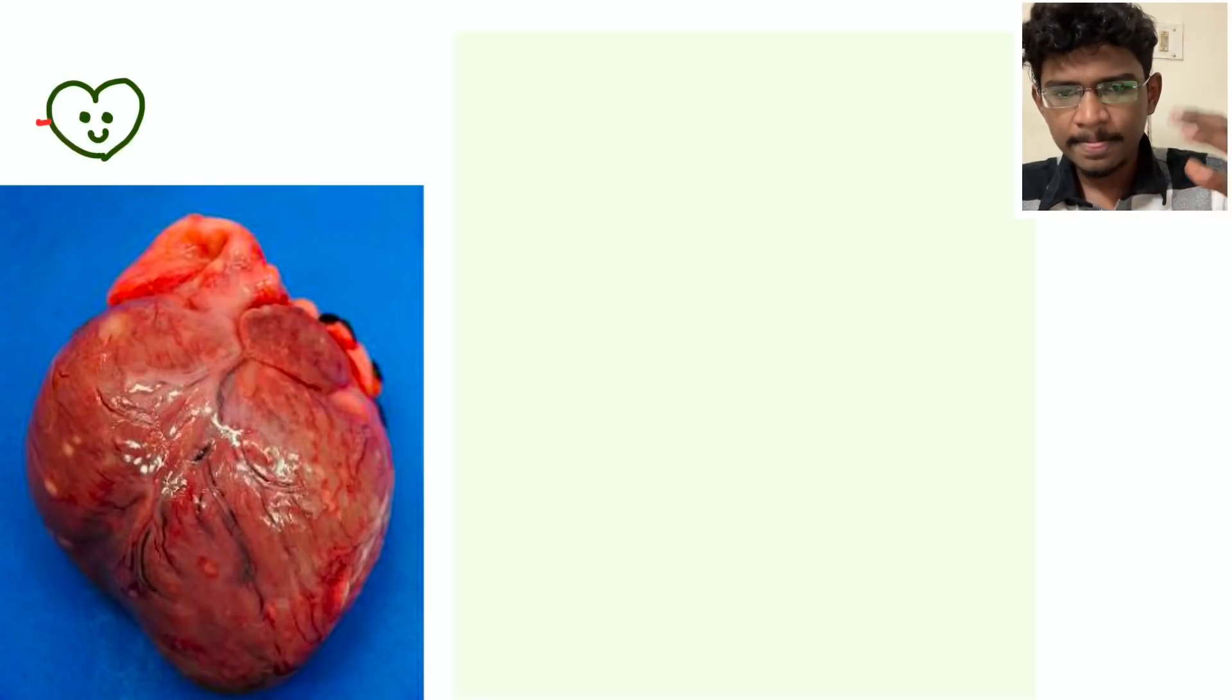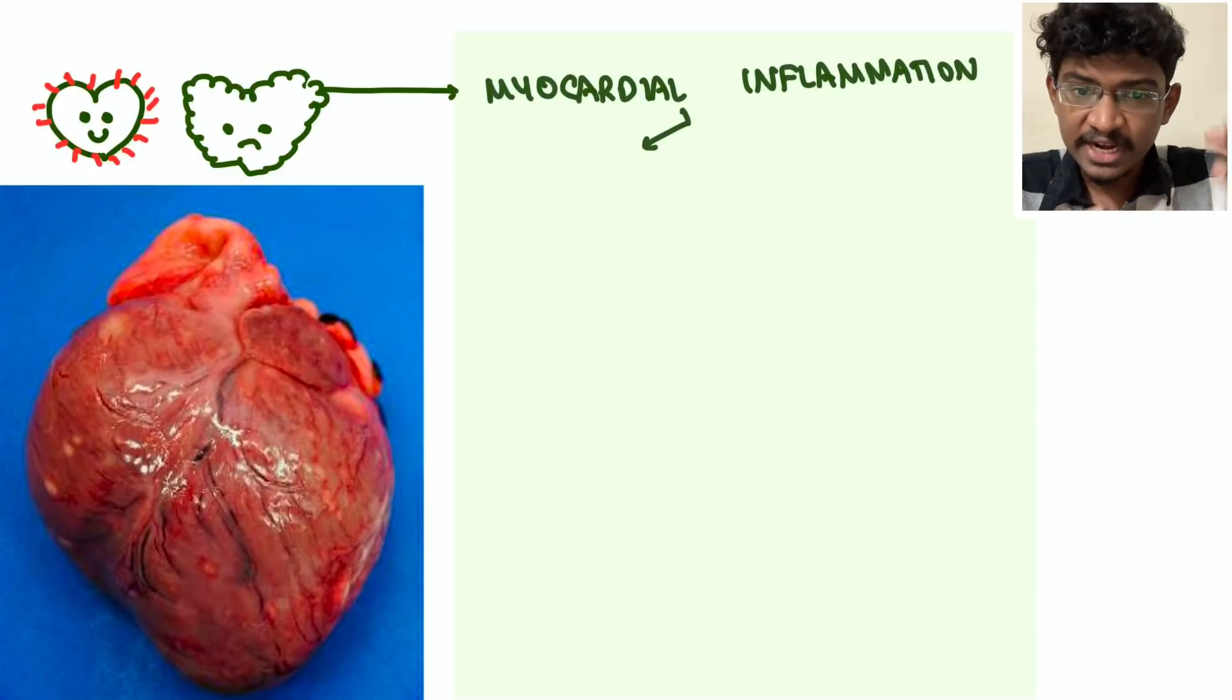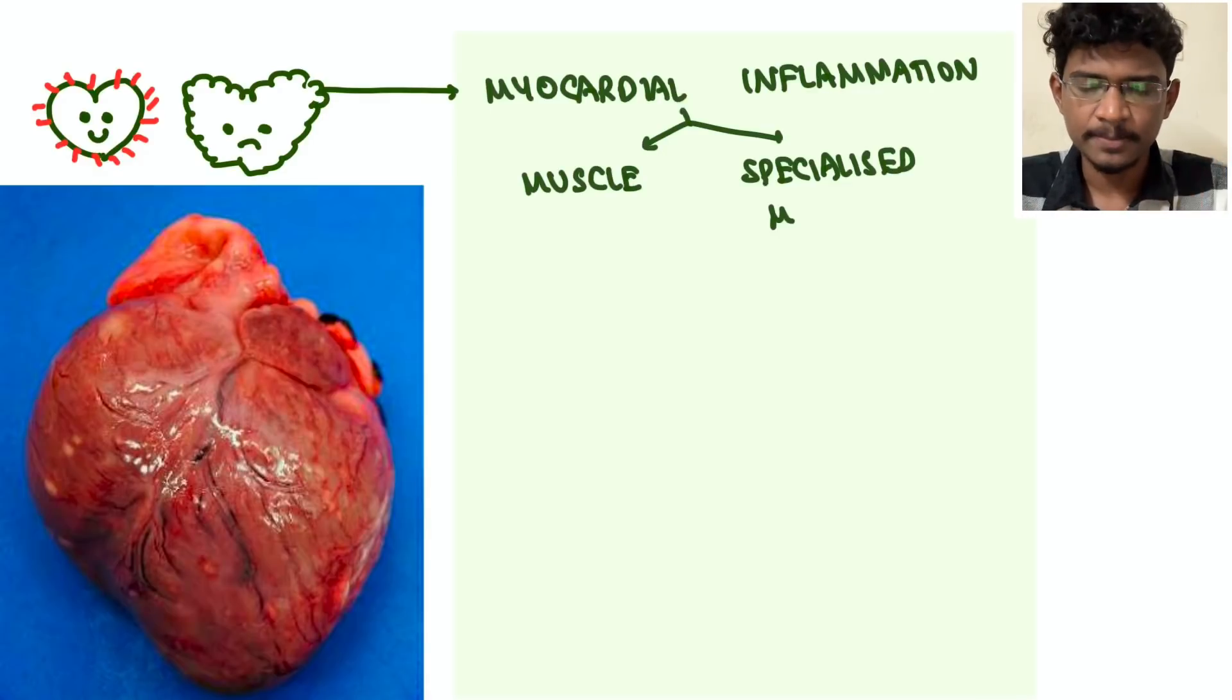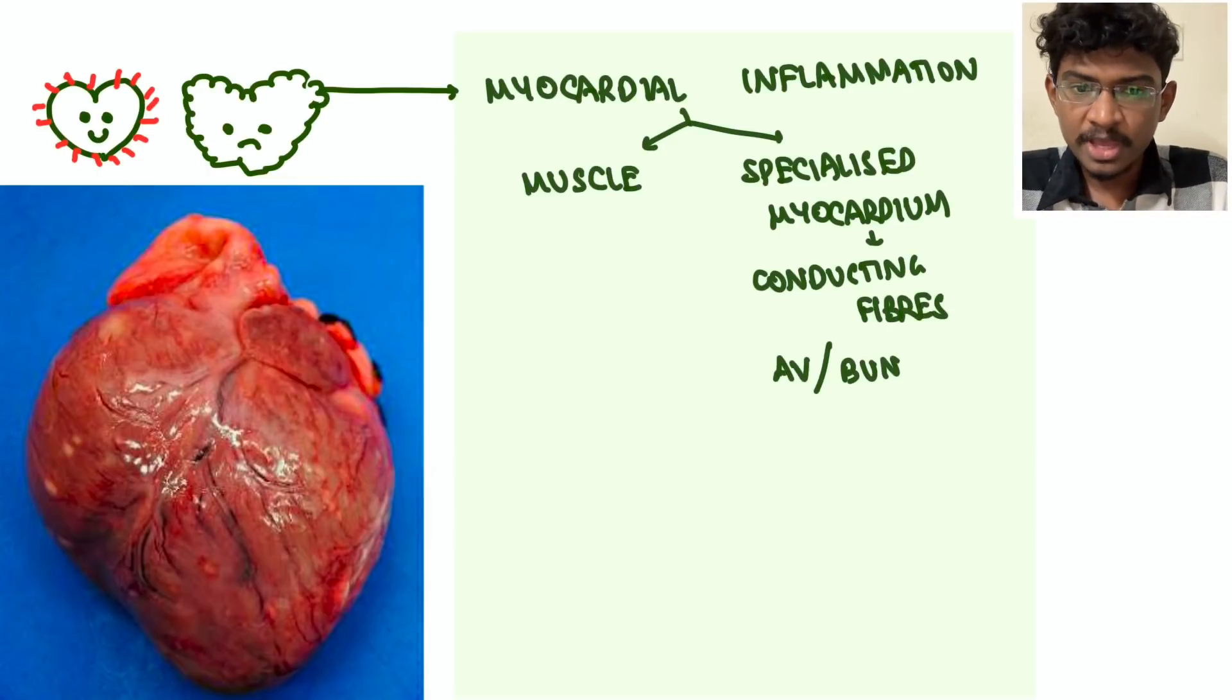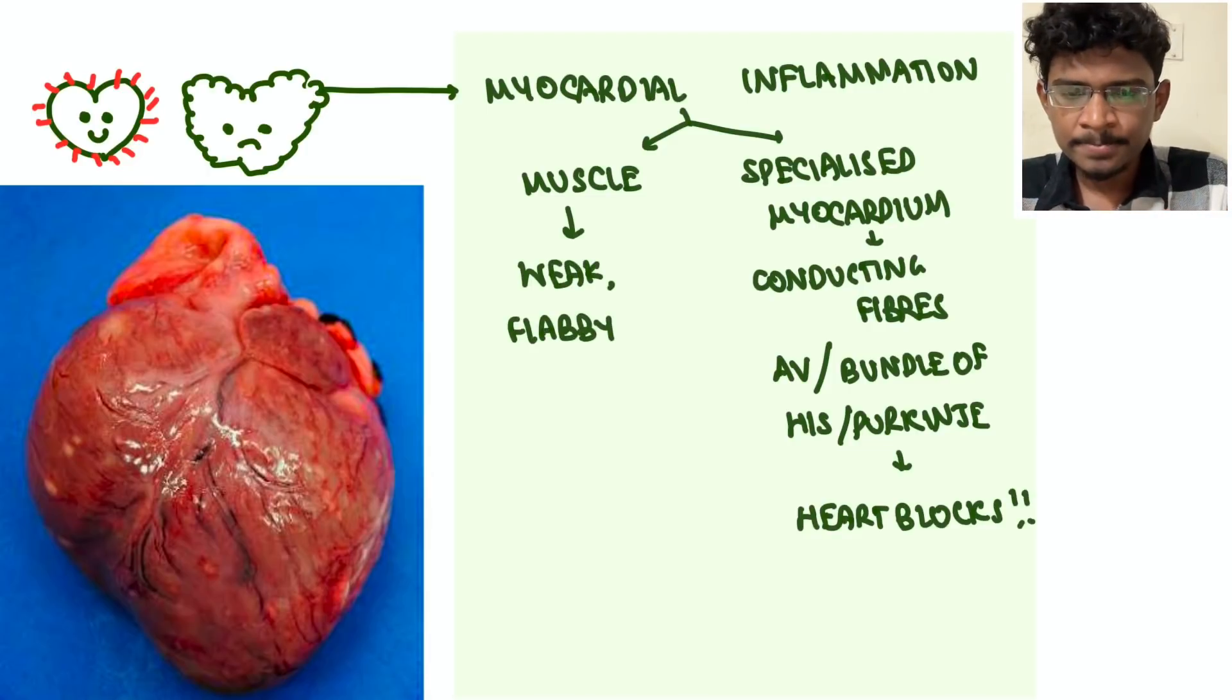So what is myocarditis? It is just inflammation of the entire myocardium, making that myocardium flabby. What is actually myocardium? It includes the muscle part as well as the specialized myocardium, which are the conducting fibers - AV node, bundle of His, Purkinje fibers, everything. So if this inflammation happens, it will block the conduction pathway also. So there will be heart blocks - first degree, second degree, third degree - all heart blocks are possible, bundle branch blocks are possible.